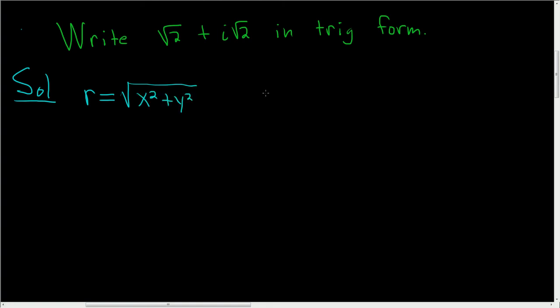And the second one is a formula that relates theta and y and x. It's the tangent of theta is equal to y over x. So in our problem here, x is the square root of 2 and y is also the square root of 2.